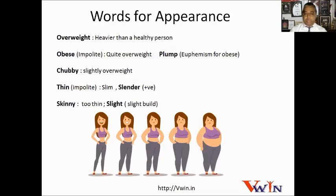Plump is a better word. Chubby means slightly overweight — this person has gained some weight but can still be called healthy. Thin is used for people who are slim or a little underweight. Slender means the person is not only slim but also fit and healthy — you are appreciating the person. Slim is a more positive word than thin, which is considered impolite.